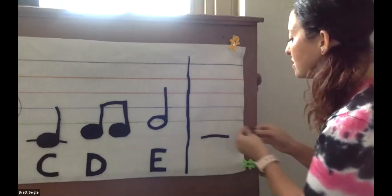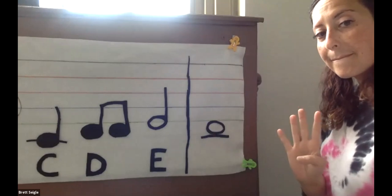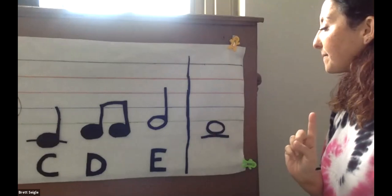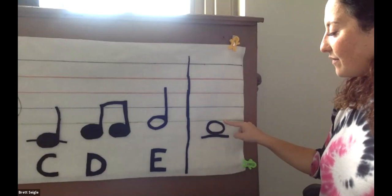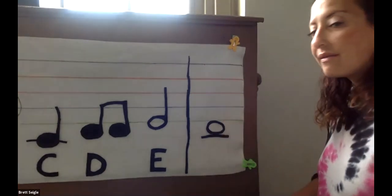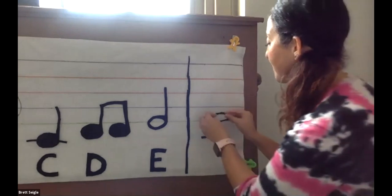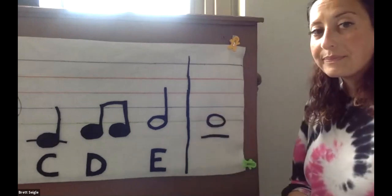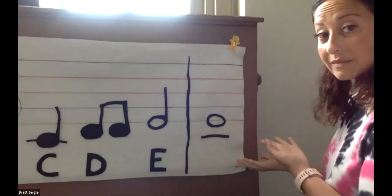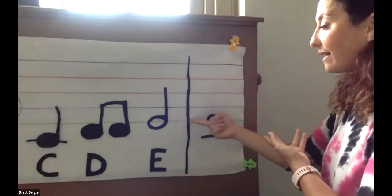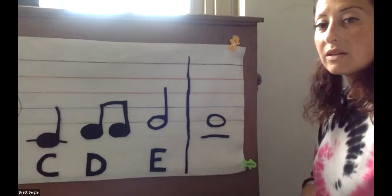First one is D. It is underneath the green line for E, but over the middle line for C. Okay. Here's our next one. What note is this with the first line of treble clef going through it? This is E. So if you guessed E, you are correct.